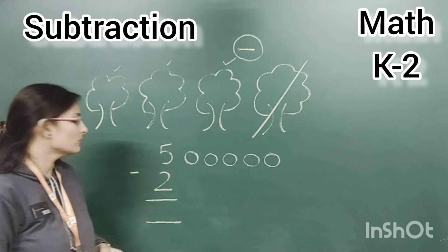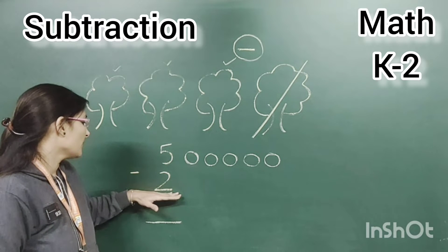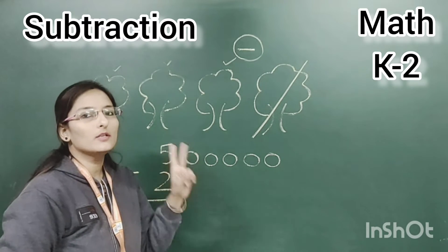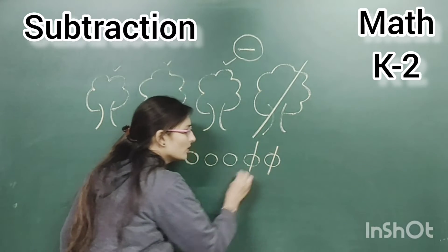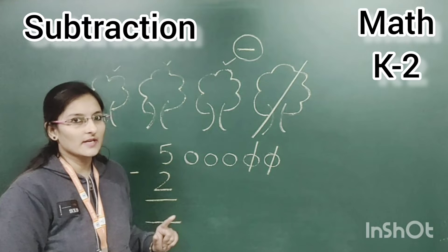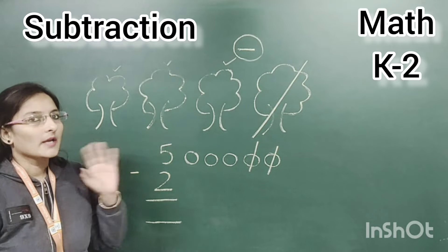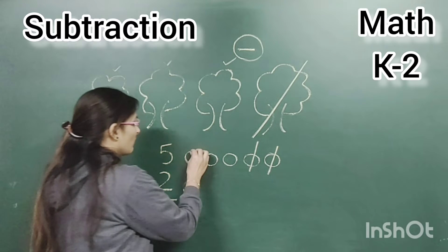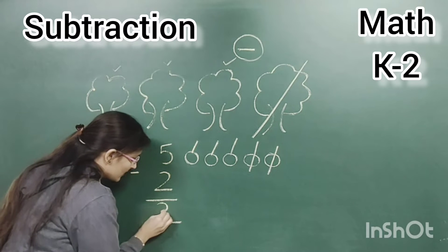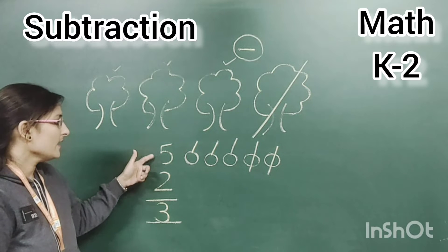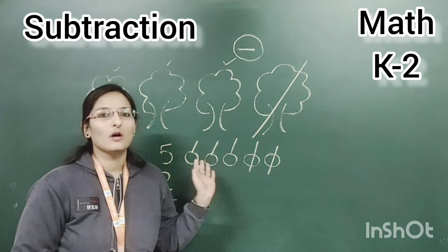Now, second step: we have to deduct the second number from those balls. The second number is two, so we have to cut two balls from the first. Start cutting: one, two. We have deducted two. Now, to write the answer, we count the remaining balls, starting from one: one, two, three. How many are left? Three. So we write the answer three. Five minus two equals three.